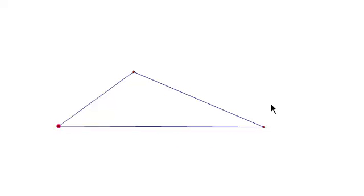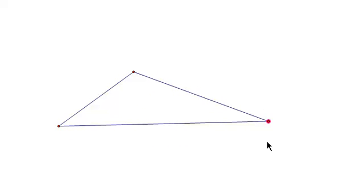Here in Geometer Sketchpad, we have a triangle, and this triangle can be moved to create any triangle we want. So in order to create the medians, the first thing we need to do is construct the midpoint of each of the three sides.